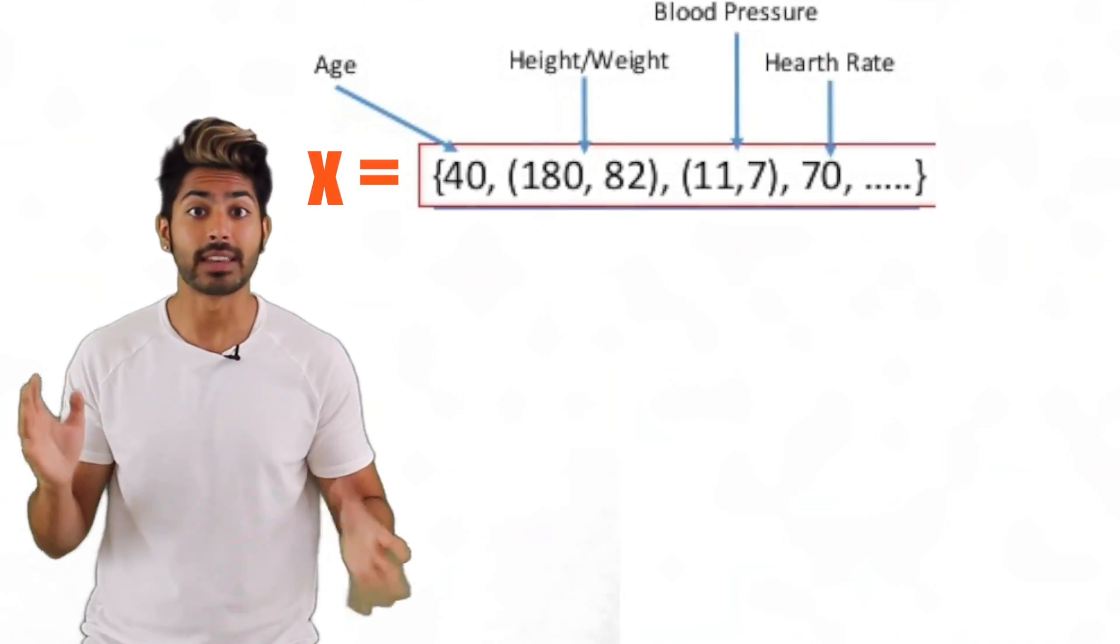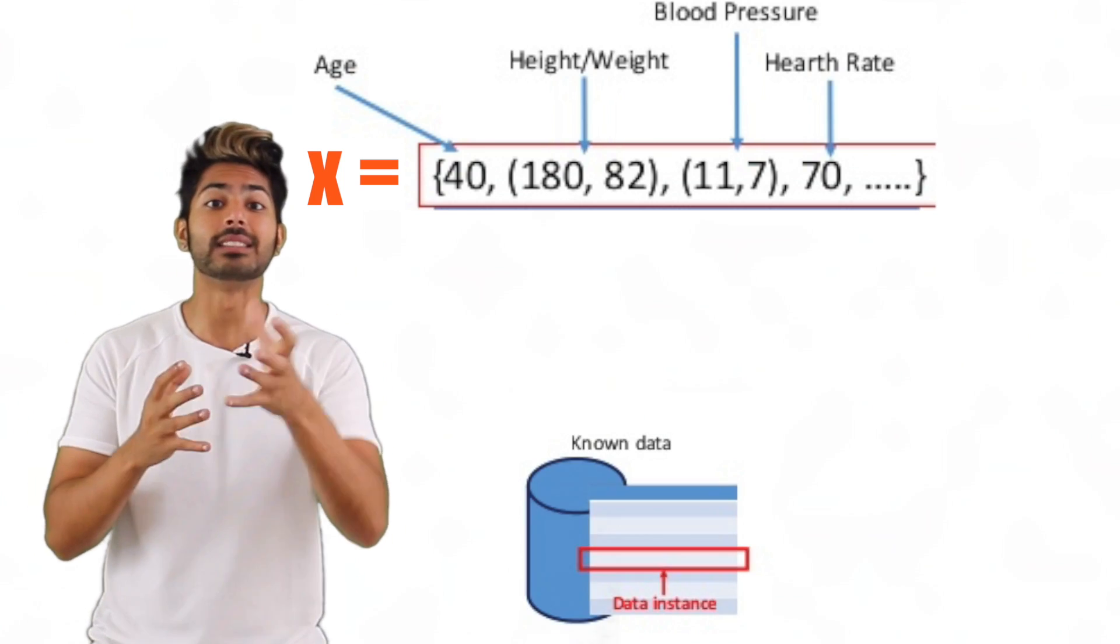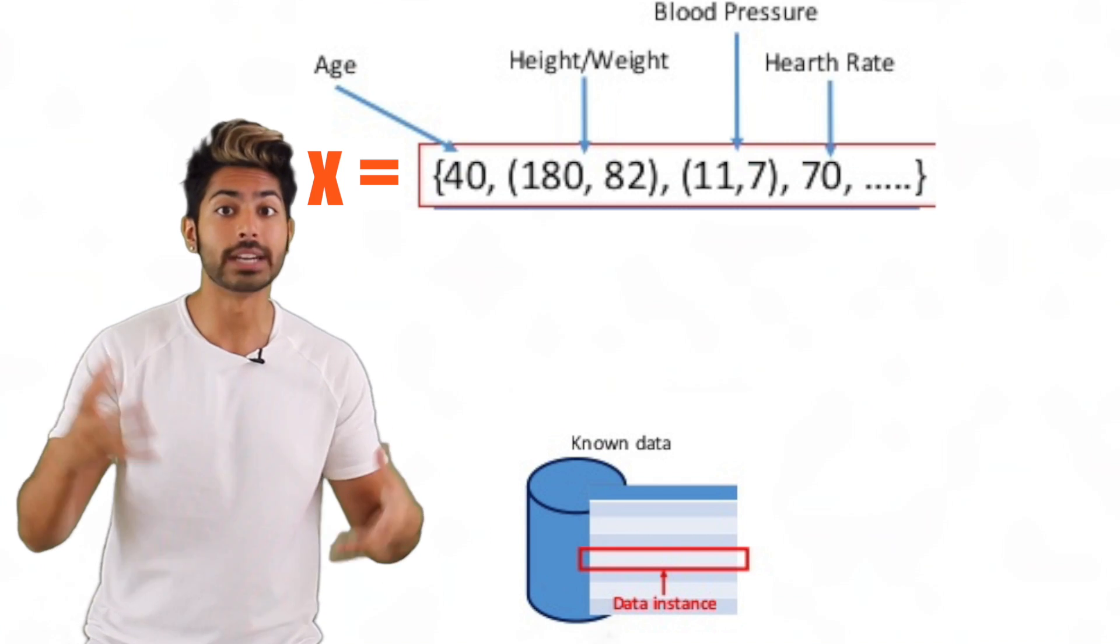This data point X is considered a vector. A vector is a one-dimensional array. Think of it as a list of values or a row in a table.